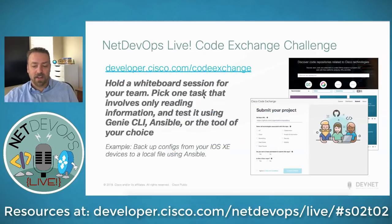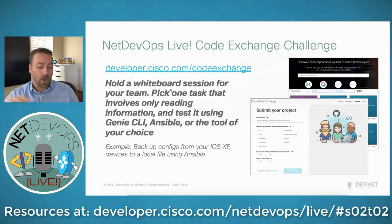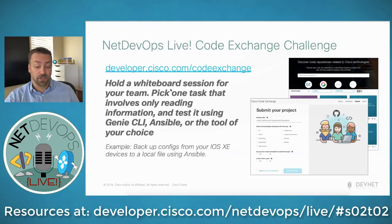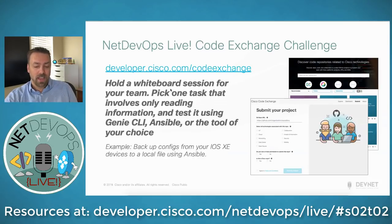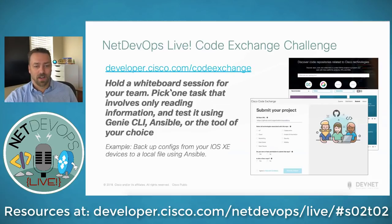The code challenge for this week: go out and run a whiteboard session, get a few people in a room, discuss your challenges, use the criteria I gave you, whittle it down to one task that could use automation — read-only only, no writing yet — try it out using Genie CLI, Ansible, or another tool of your choice, and then submit it to Code Exchange and show us what you built. No automation is too small when you're getting started.